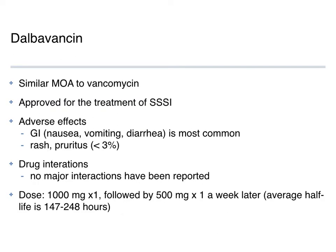Finally, dalbavancin — approved in 2014 — lacks those extra mechanisms of action of oritavancin and really only works the same way as vancomycin. Also approved for treatment of skin and soft tissue infections, with fairly mild adverse effects. It can also cause red man/red neck syndrome. Interestingly, no major drug-drug interactions have been identified yet. It also has a long half-life — not a single-dose therapy but a two-dose therapy: a single one-gram dose IV, followed a week later by a 500 mg dose, and then you're done.